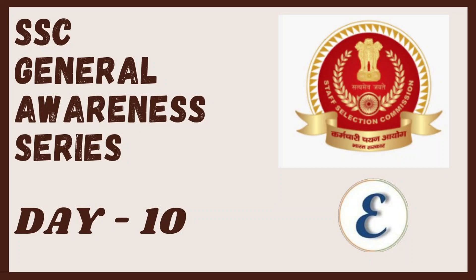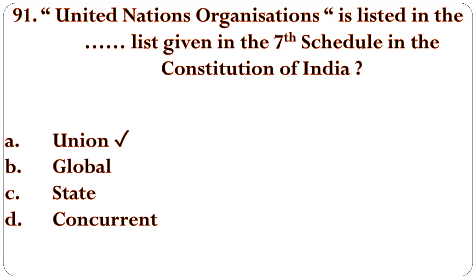Today, 91st question. So, the previous 90 questions are complete. 91st question: United Nations Organizations is listed in the dash list given in the 7th schedule in the Constitution of India. The answer is Union List — not global list, not state list, not concurrent list — Union List. That is the answer.